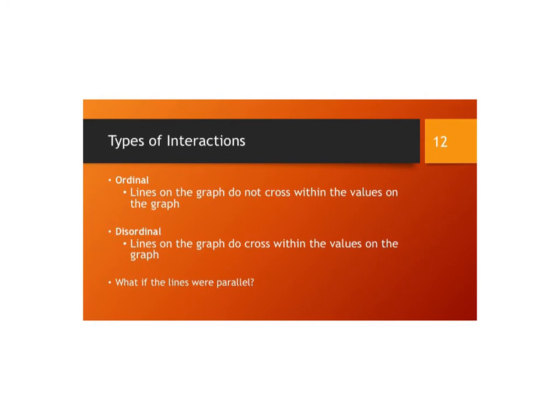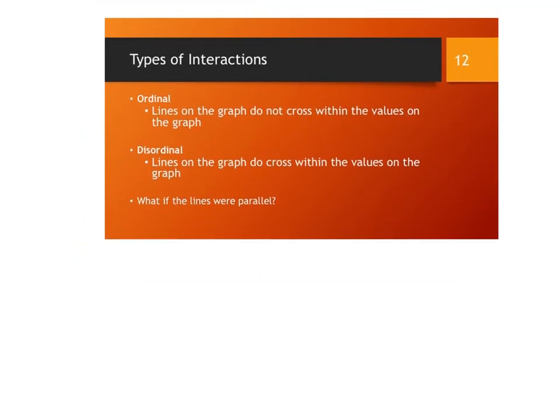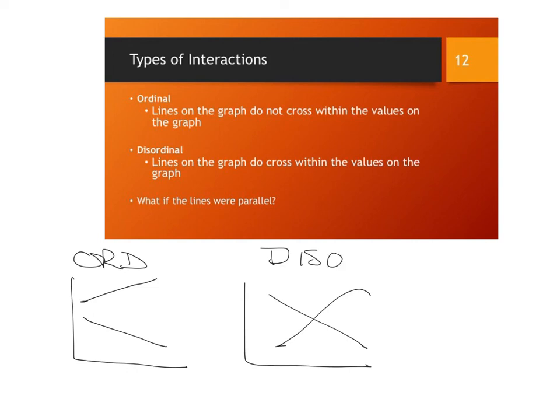We can also name these interactions. If the lines on the graph do not cross within the values of the graph, that's going to be an ordinal interaction. If the lines do cross within the graph, that is your disordinal interaction. And if the lines are parallel, that's going to be no interaction. Hopefully this review has helped you and prepared you as we get ready for the next content in class.